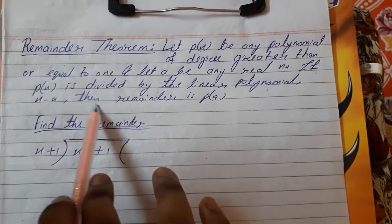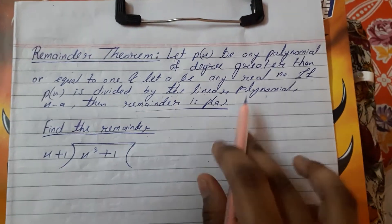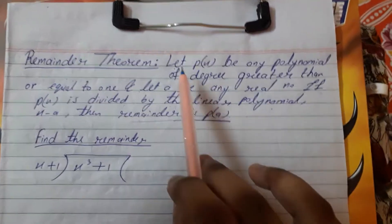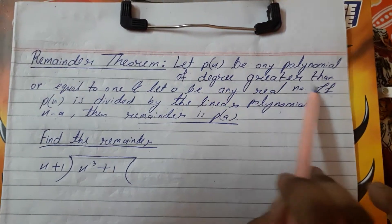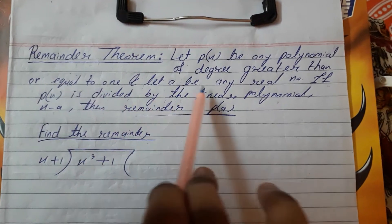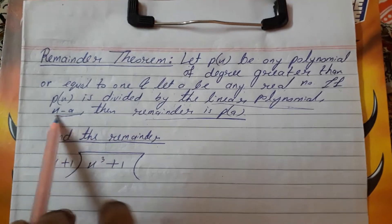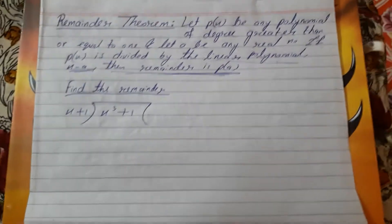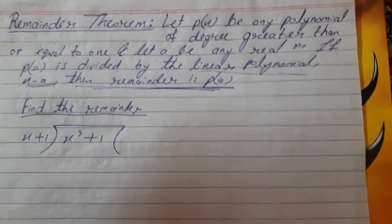This is all about the Remainder Theorem. Let p(x) be any polynomial of degree greater than or equal to 1, and let a be any real number. If p(x) is divided by the linear polynomial x minus a, then the remainder is p(a). This means what is given in your divisor.